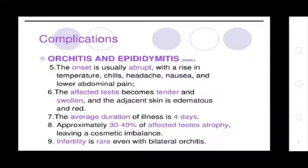The onset of orchitis is usually abrupt with rise of temperature, chills, headache, nausea, and lower abdominal pain. The affected testis becomes tender and swollen, and the adjacent skin is edematous and red. The average duration of illness is 4 days. Approximately 30 to 40% of affected testes atrophy, leaving a cosmetic imbalance. Infertility is rare even in bilateral orchitis.